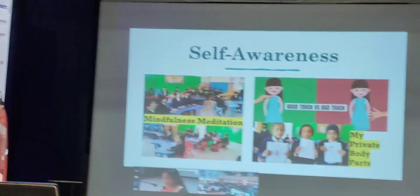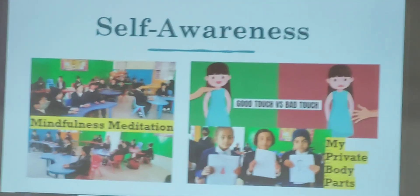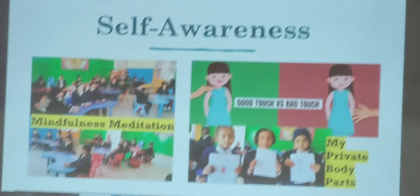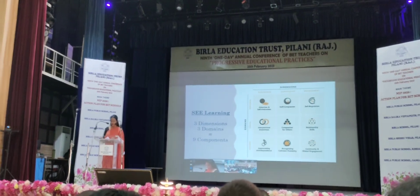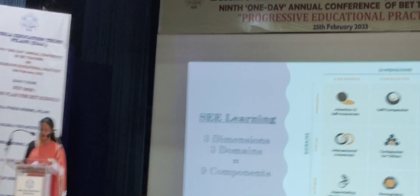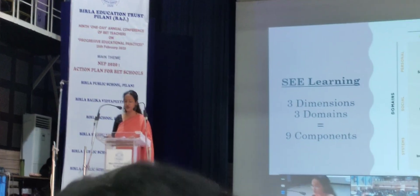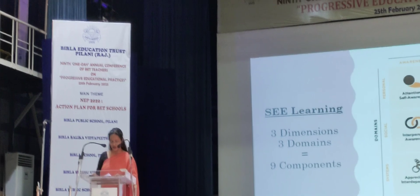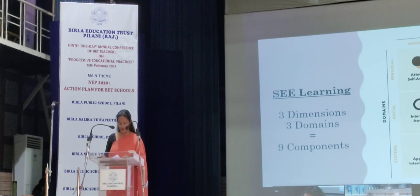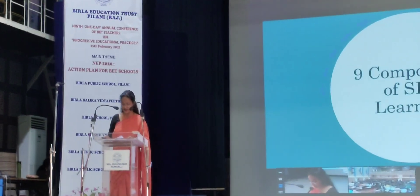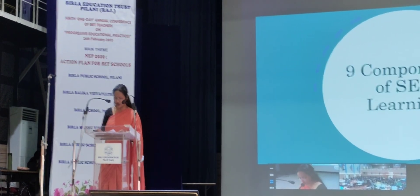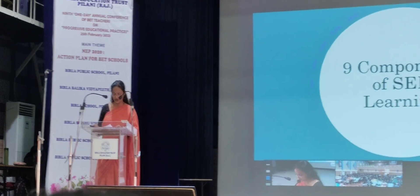The first competency is Self-awareness — the ability to perceive and understand the things that make you who you are as an individual, including compassion and engagement. These 3 dimensions extend to 3 different domains: personal, social, and system. It has 9 components that are consistent across all age levels of the curriculum.